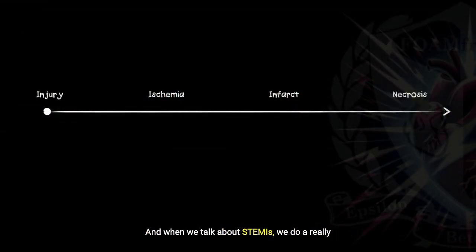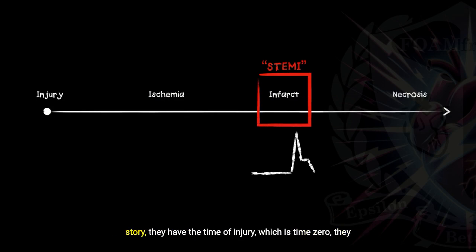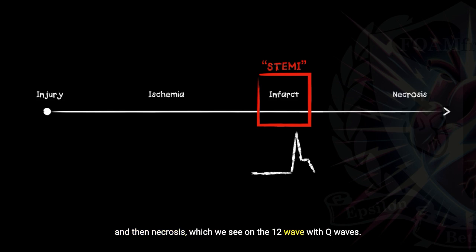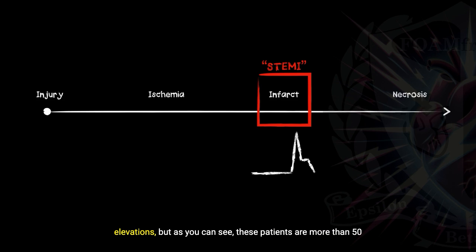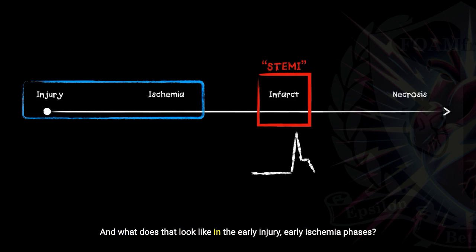When we talk about STEMIs, we do a really good job at catching the MI here in the infarction stage. As patients progress through their acute coronary syndrome story, they have the time of injury, which is time zero, they progress through injury, through ischemia, then into infarction, and then necrosis, which we see on the 12-lead with Q waves. We're often taught to catch the obvious ST segment elevations, but these patients are more than 50% of the way through their acute coronary syndrome story. So what are some ECG findings we can see before ST segment elevation is showing on the 12-lead, and what does that look like in the early injury, early ischemia phases?